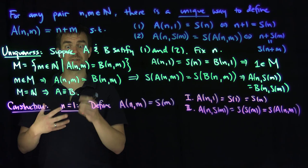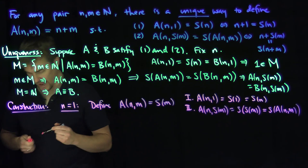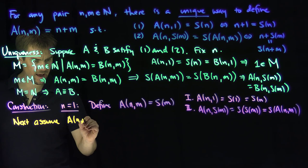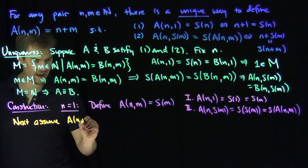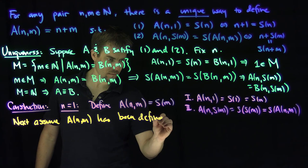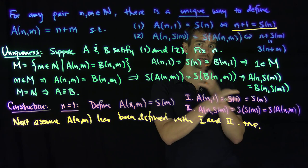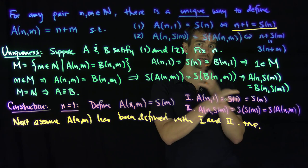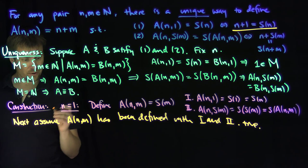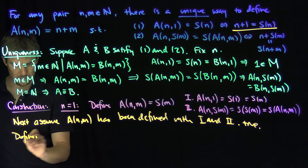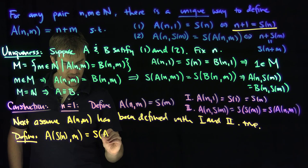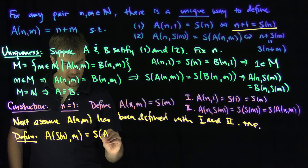If we consider the set of all n for which we can define this operation, we're close to showing this by induction. Next, assume A(n,m) has been defined with properties one and two being true. We define A(S(n), m) by definition to be the successor of A(n,m). That is our definition of addition at the successor of n. We know this is well-defined since A(n,m) is already defined, and this well-defined object on the right-hand side tells us how to define the object for S(n).